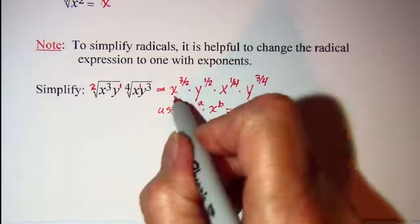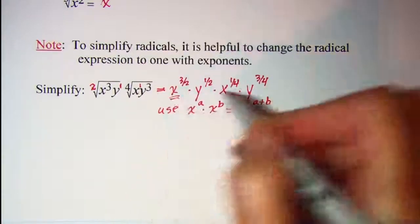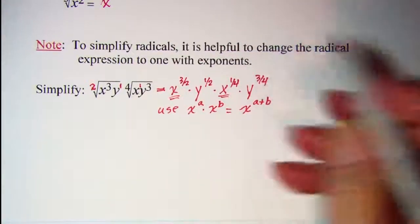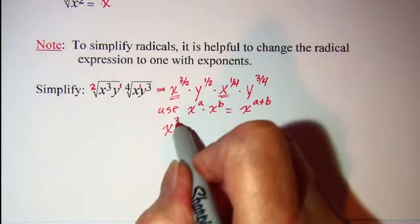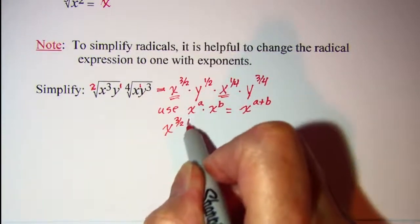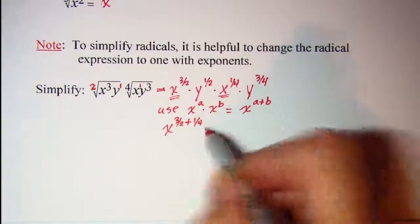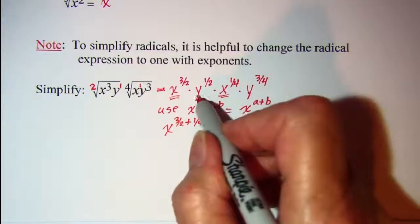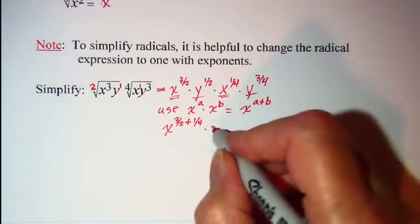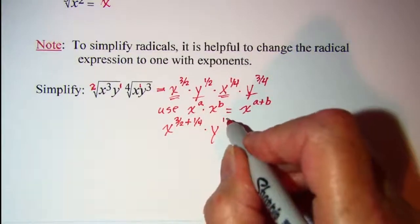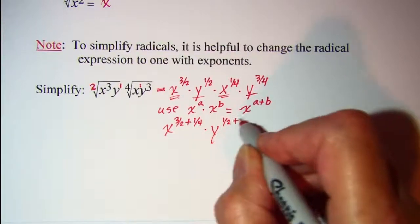So I'll take this factor and this factor and simplify that. We have x to the 3 halves plus 1 fourth and then I can put these two factors together. That'll be y to the 1 half plus 3 fourths.